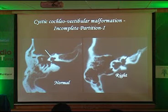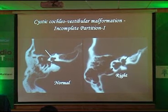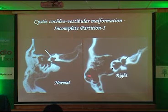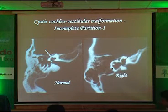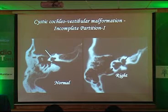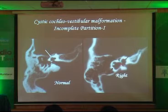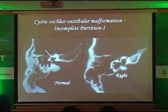Incomplete partition — the latest classification uses IP1 and IP2. In incomplete partition 1 (IP1), you see a cystic cochlea and a cystic vestibule. Remember: cochlea is always anterior, vestibule is posterior. So you can make out there is a cystic dilatation of the cochlea and cystic dilatation of the vestibule in an IP1 malformation.